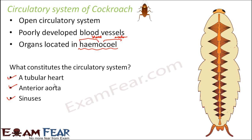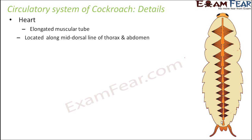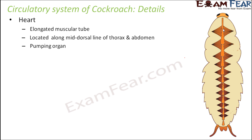The heart is an elongated muscular tube located along the mid-dorsal line of the thorax and abdomen. You can locate the heart only from the dorsal side, not the ventral side. It is the pumping organ which helps pump blood to different parts of the body.